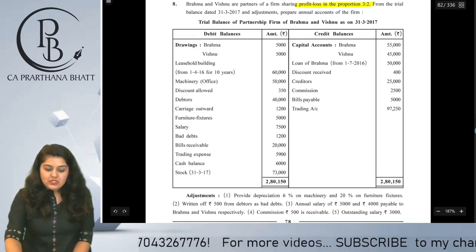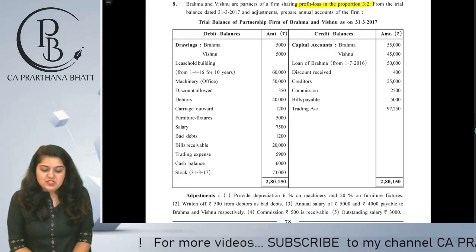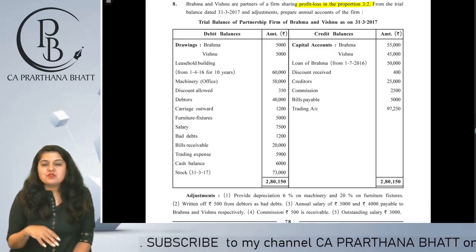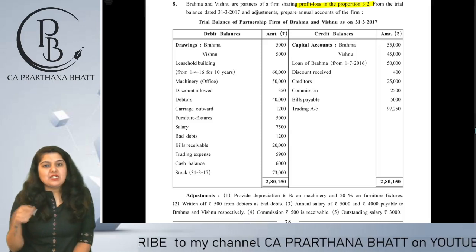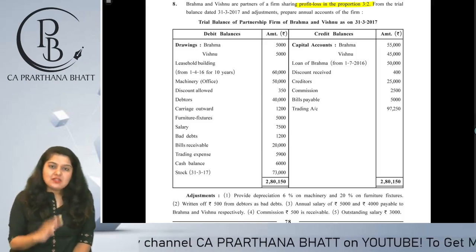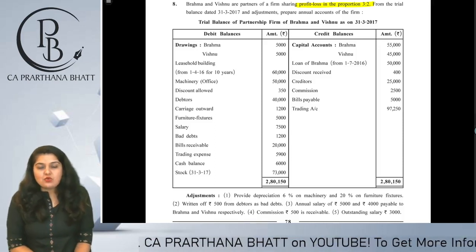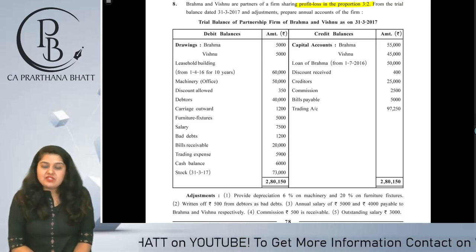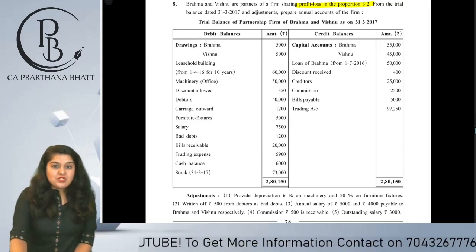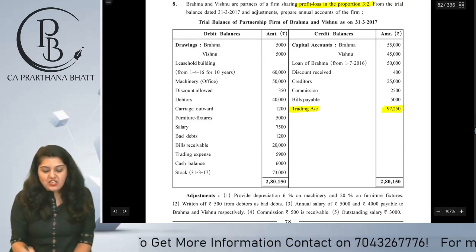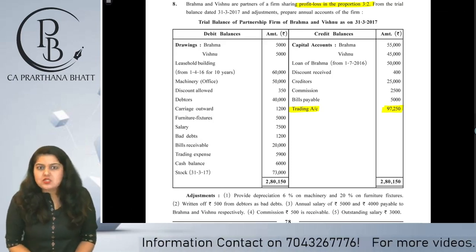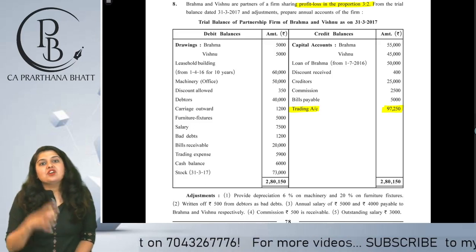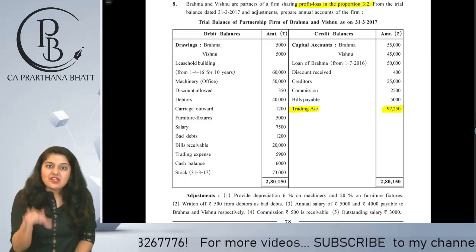From the trial balance dated 31st March 2017 and the adjustments, prepare annual accounts of the firm. One important thing - read it carefully, don't just rush into writing the trading P&L and balance sheet format. First understand the question. Credit balances include capital accounts, loan of Ramma, discount received, creditors, commission, bills payable, and trading account. The trading account having a credit balance means we already have the gross profit.